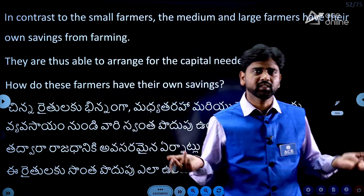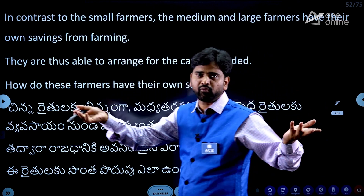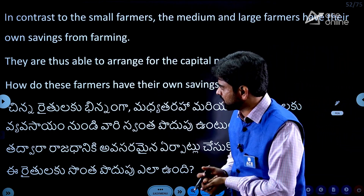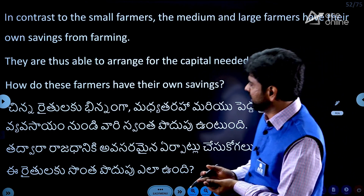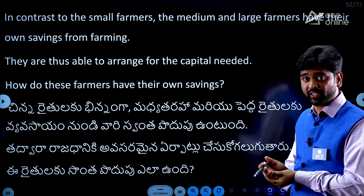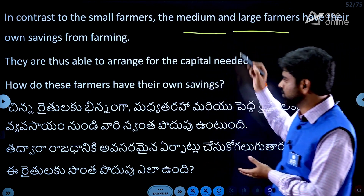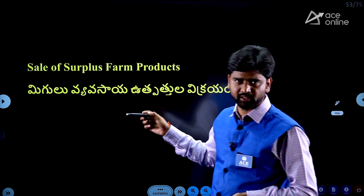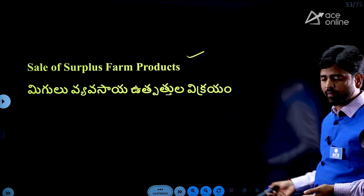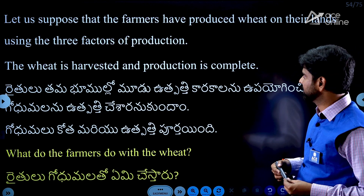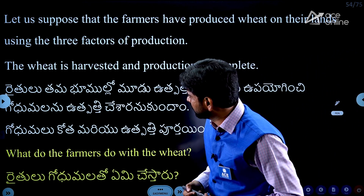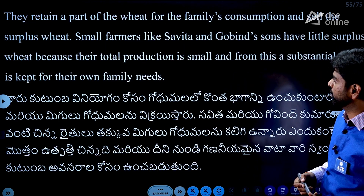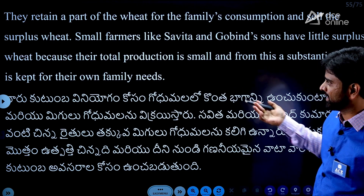Medium and large farmers can access banks and are thus able to arrange for the capital needed. How do these farmers have their own savings? Let us suppose that the farmers have produced wheat on their lands using three factors of production. The wheat is harvested and production is complete.